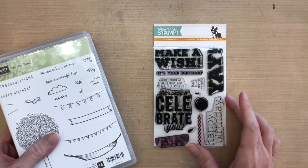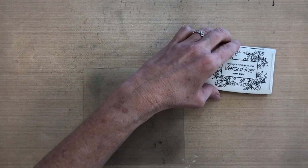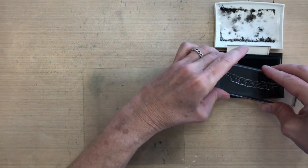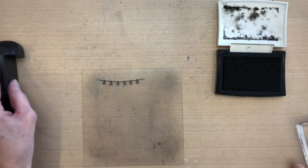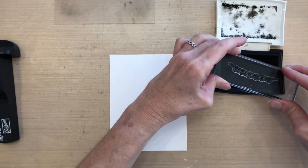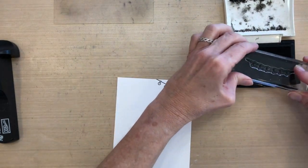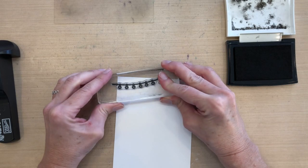So I'm gonna start with some VersaFine black onyx ink and my Stampin' Jig because I'm gonna need it in just a little bit. So I'm gonna get my plastic sheet ready now.